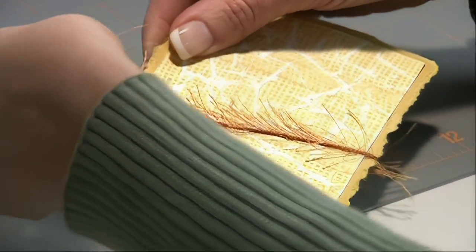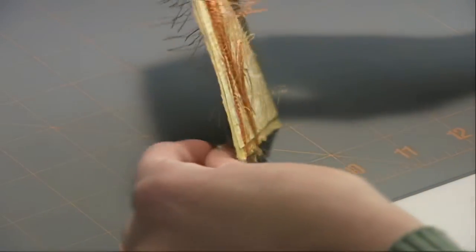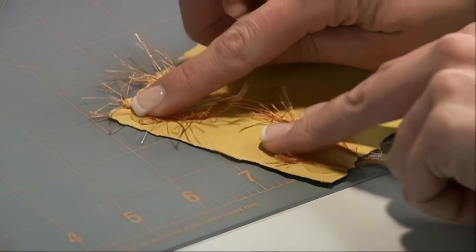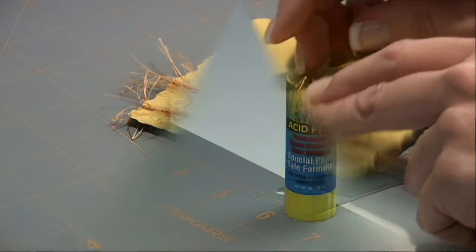Now we will take the end of our fiber and press it down into the glue dot. Wrap it to the front. Bring it back up the back and again in the front with a criss cross. Then attach the end onto the glue dot pressing firmly.